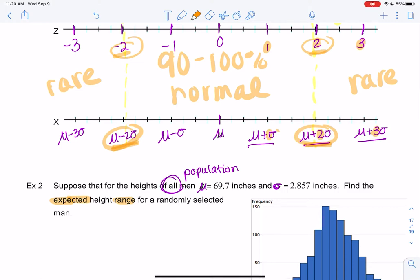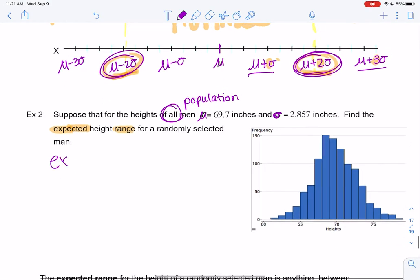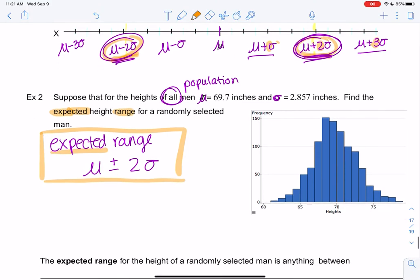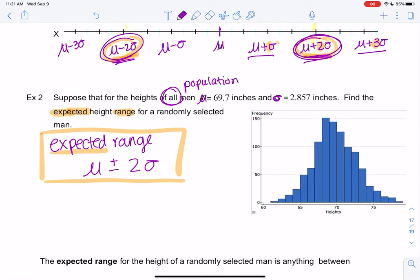You can see it above where most of the data falls within two standard deviations. These two numbers represent my expected range. The expected range—write this down and box it—will be the mean plus or minus two standard deviations.